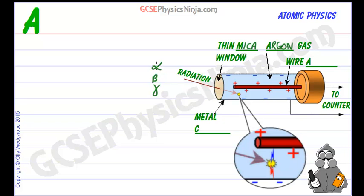Now what happens is that alpha, beta and gamma are ionizing. They are ionizing radiation. Alpha is the most ionizing followed by beta and finally gamma.